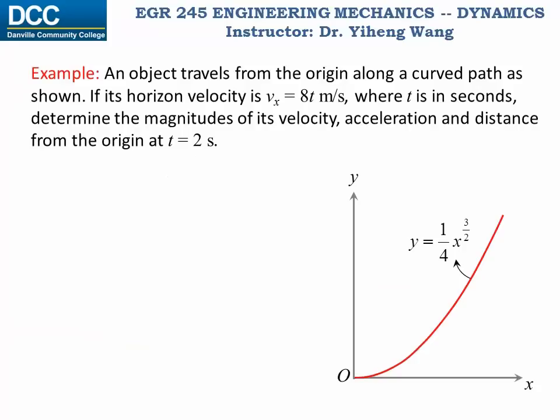Let's look at this example. The curved path this object follows is given. Its vertical position y at any given time is related to its horizontal position x by this equation that y equals to one quarter times x to the three halves power. Also the horizontal velocity vx as a function of time is also given, vx equals to eight times t, and we are asked to find the magnitudes of the object's velocity, acceleration, and distance from the origin at a time equals to two seconds.